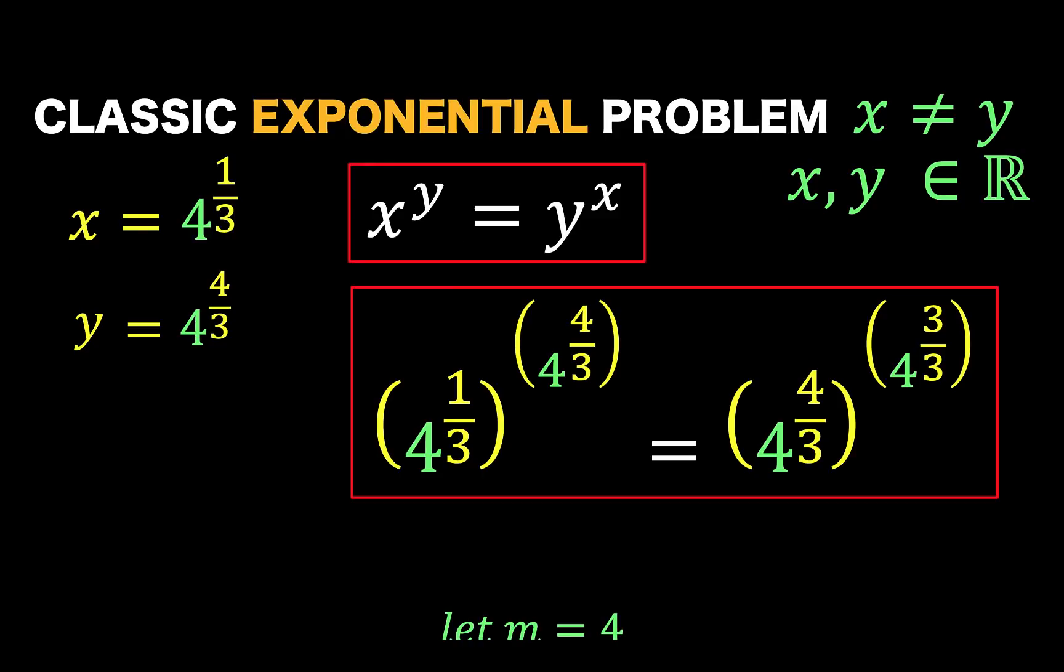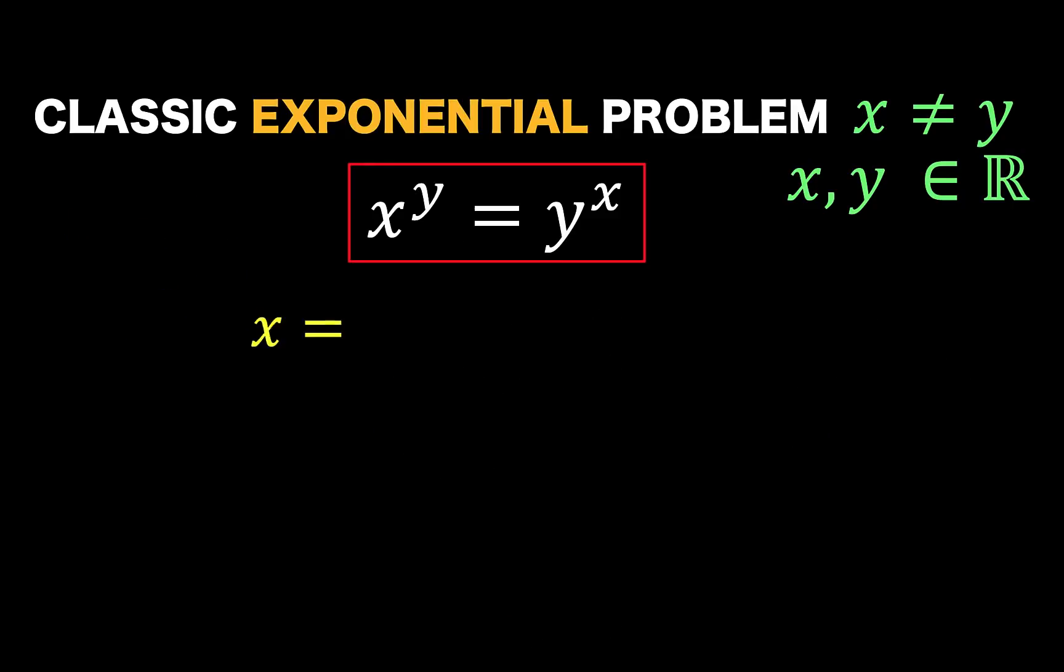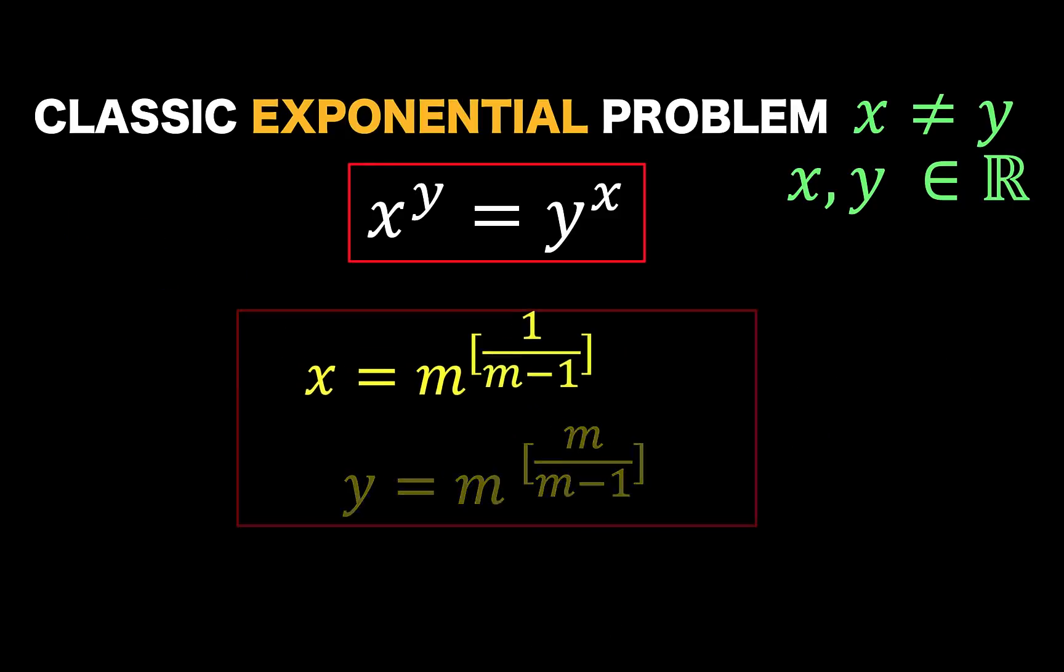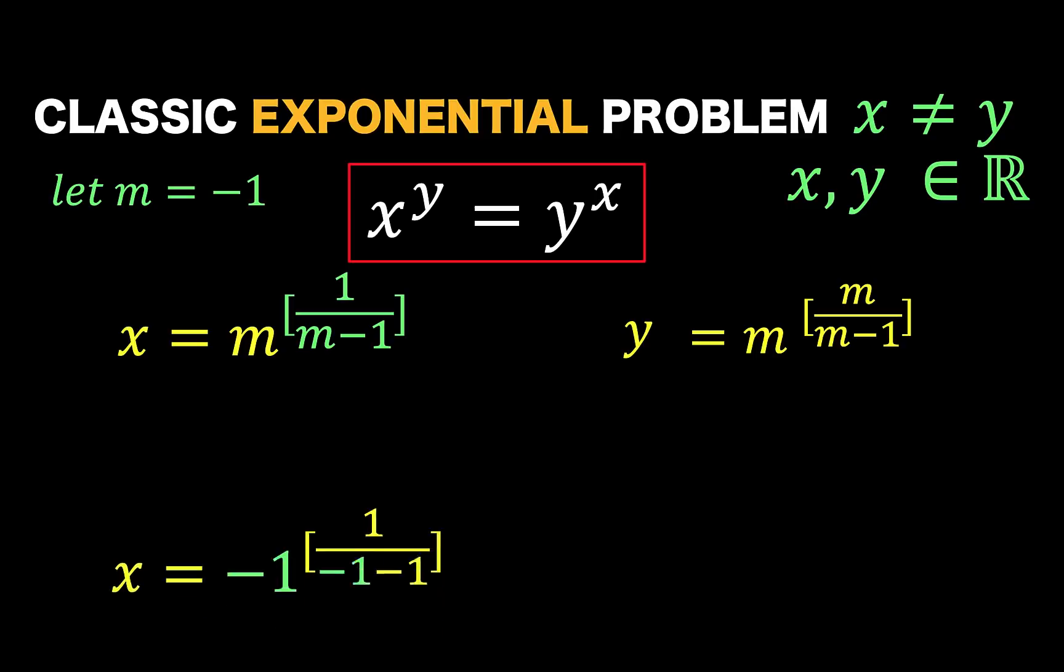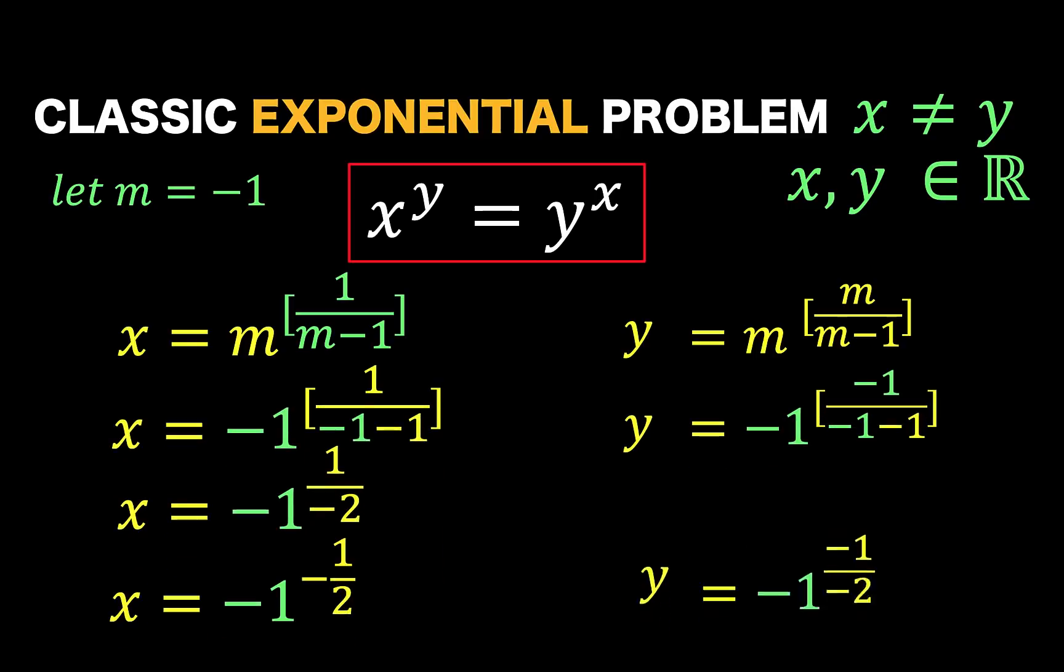Now, what if m equals negative number? Let's say if we let m be equal to negative 1. If m equals negative 1, let's substitute all the m's again by negative 1. And we have this result. x equals negative 1 raised to negative 1 half, and y equals negative 1 raised to 1 half.